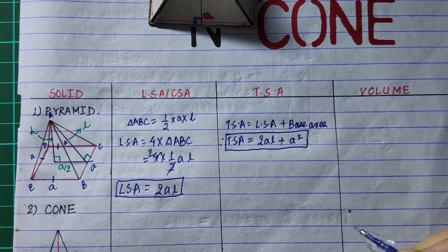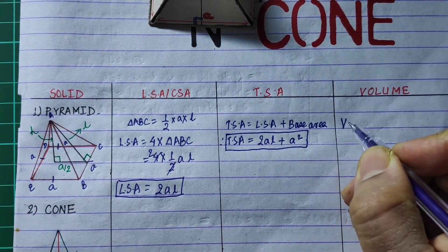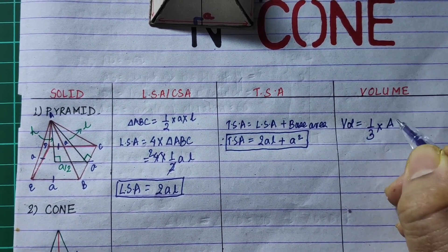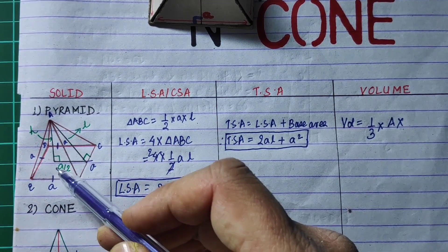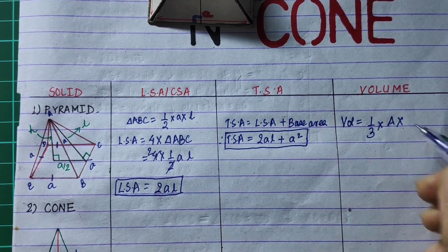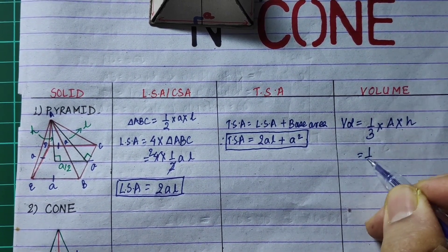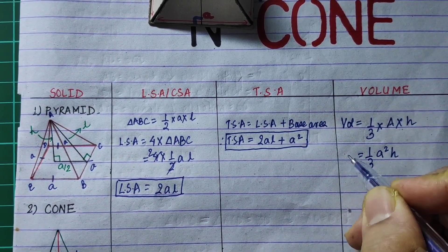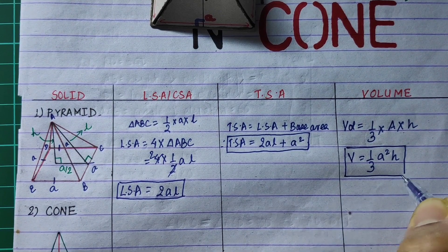The volume is one-third of the base area times height. H is the vertical height — the vertex to base is perpendicular to the vertical height. So the volume is 1 by 3 into base area, where base area is A squared, giving the volume formula as 1 by 3 into A squared into H.